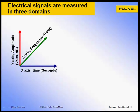Electrophenomena can be measured in three domains: amplitude, the y-axis, time, the x-axis, and frequency, the z-axis.